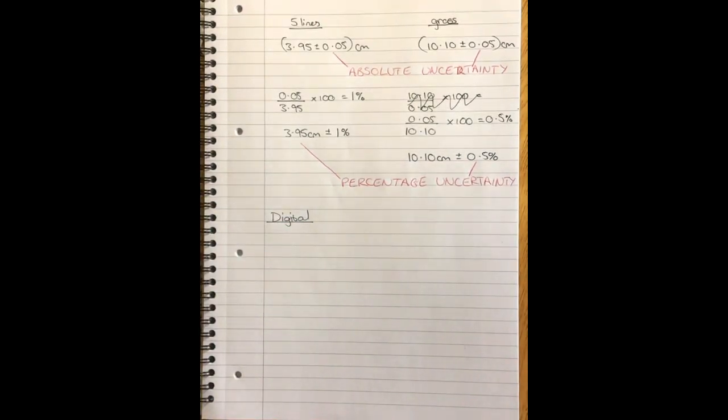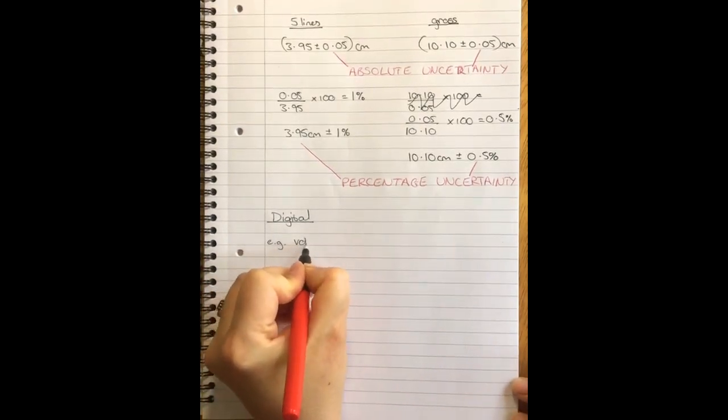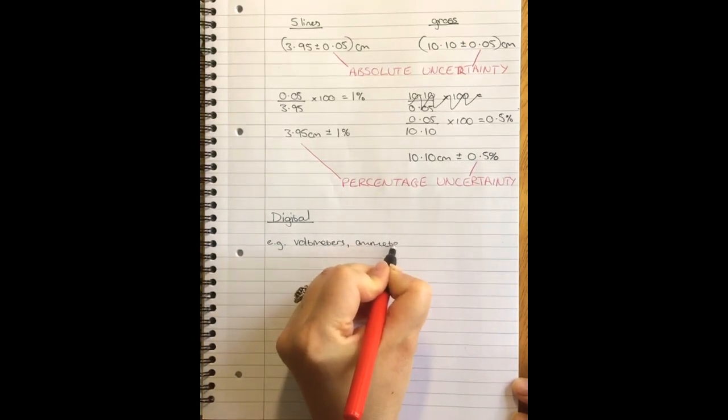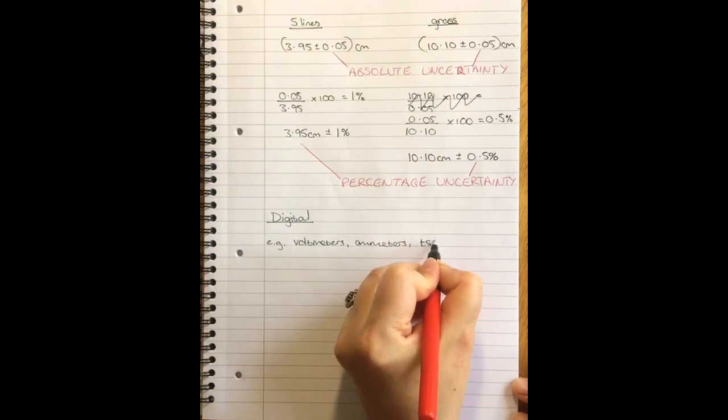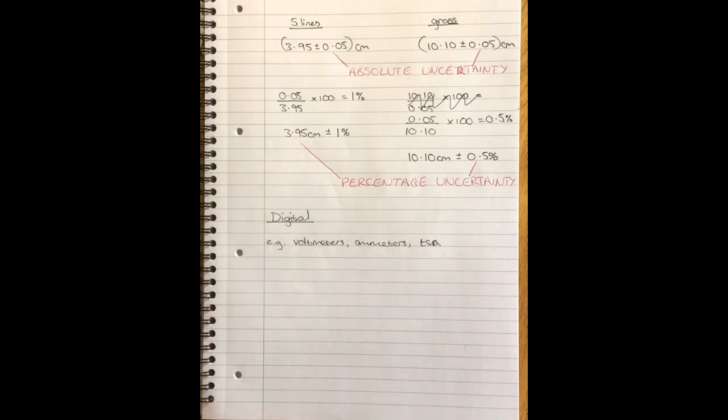We make lots of digital measurements in the classroom, and most notably we have voltmeters, ammeters, and TSAs, our time speed acceleration boxes that we attach to light gates. We often think that because something is digital that makes it a better or more accurate measurement.